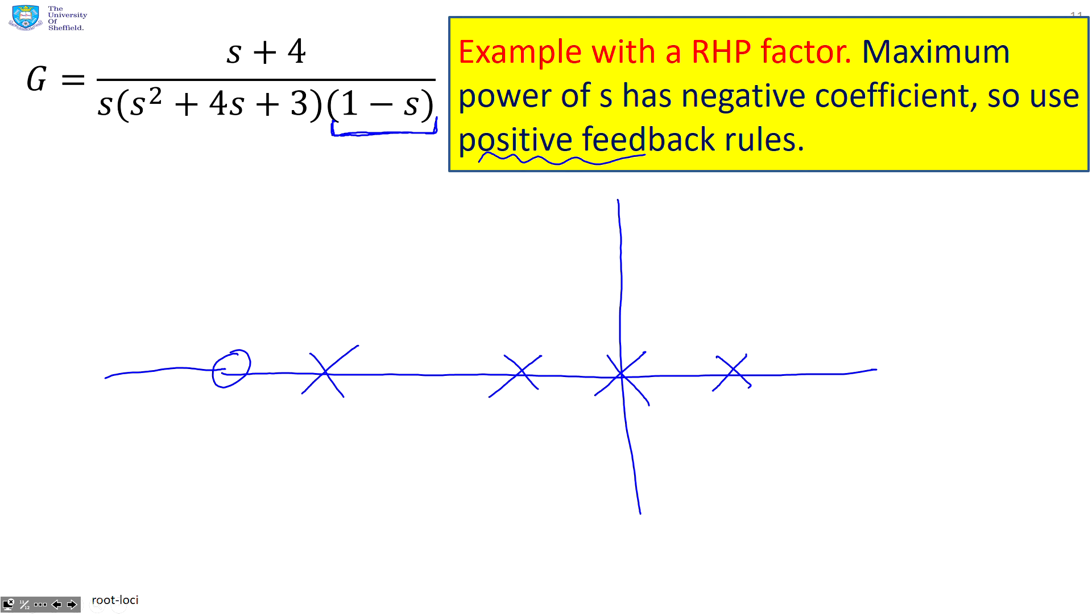Right. Rule three, asymptotes. So we've got here k minus m equals three. So there's three asymptotes. And because we've got positive feedback rules, those asymptotes are going to be zero degrees and plus or minus 120 degrees.